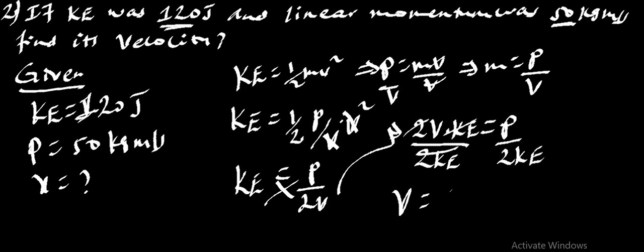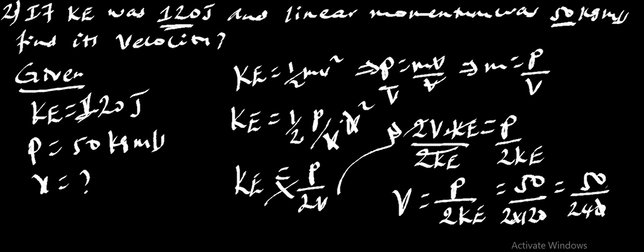Therefore, V is P over 2 times kinetic energy. P is 50 divided by 2 times 120 is equal to 50 divided by 240. Therefore, 50 divided by 24, which is 0.21. Therefore, V is equal to 0.21 m per second.